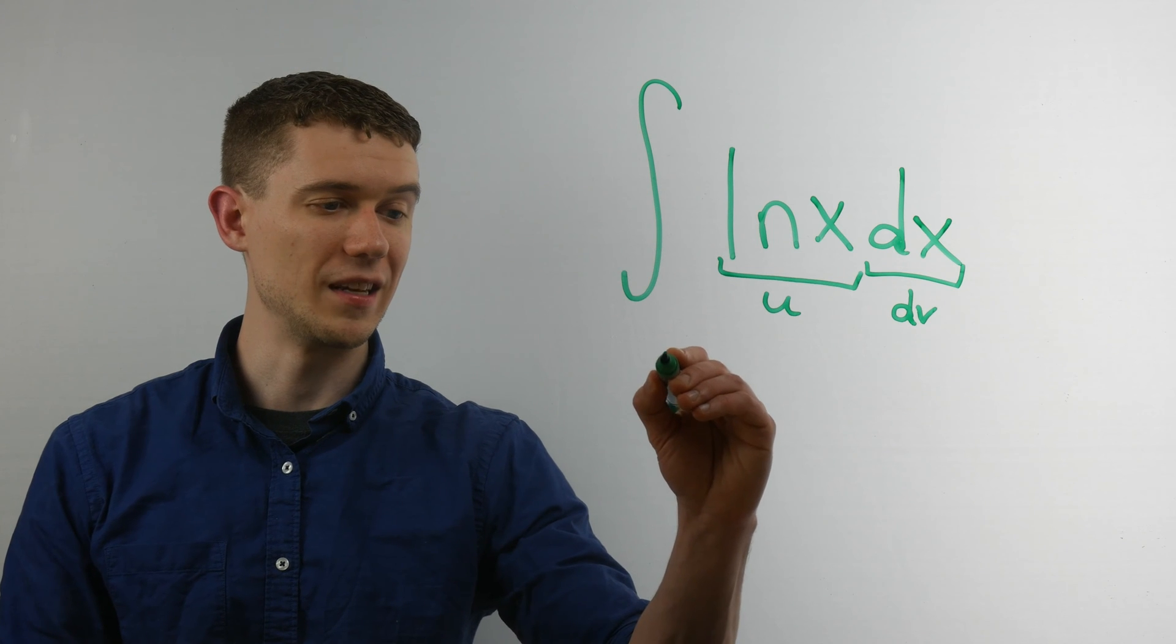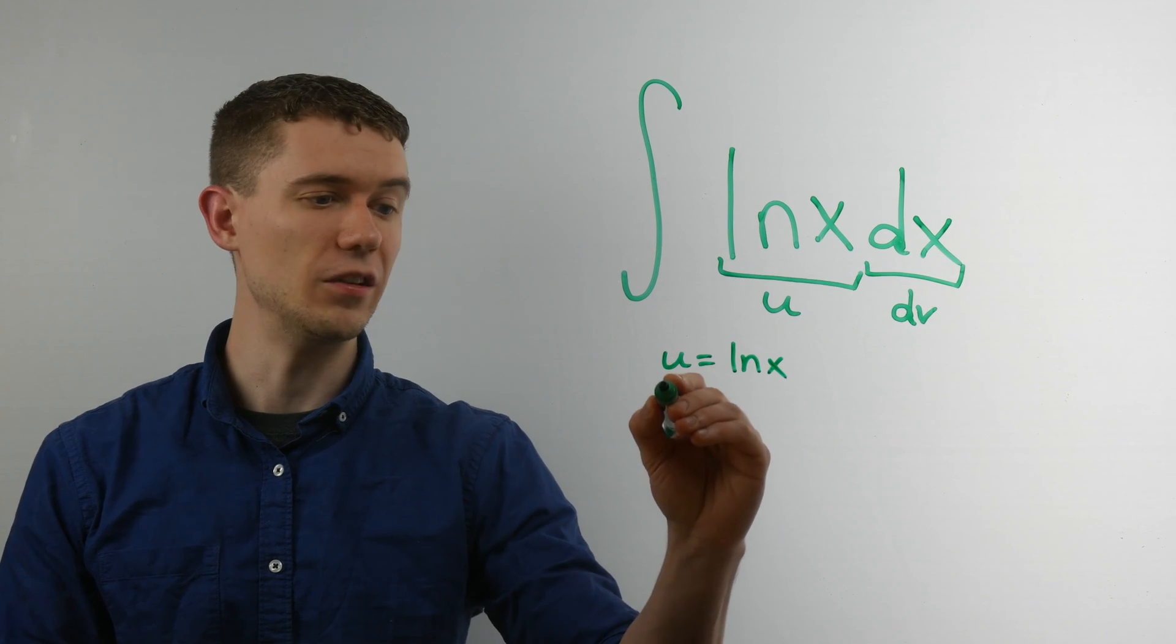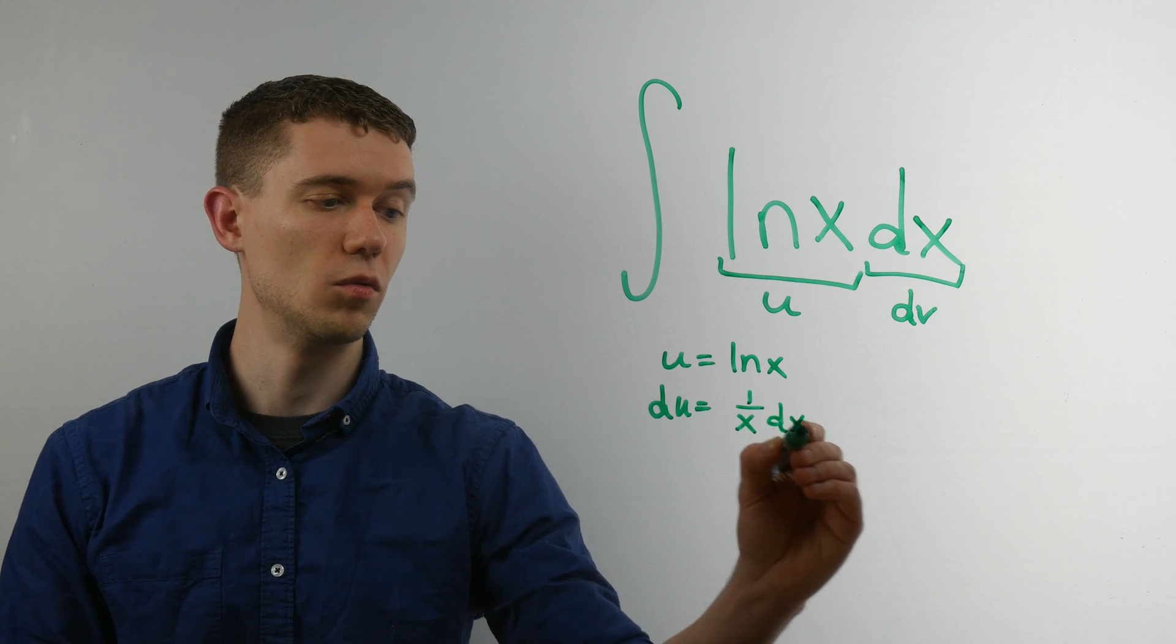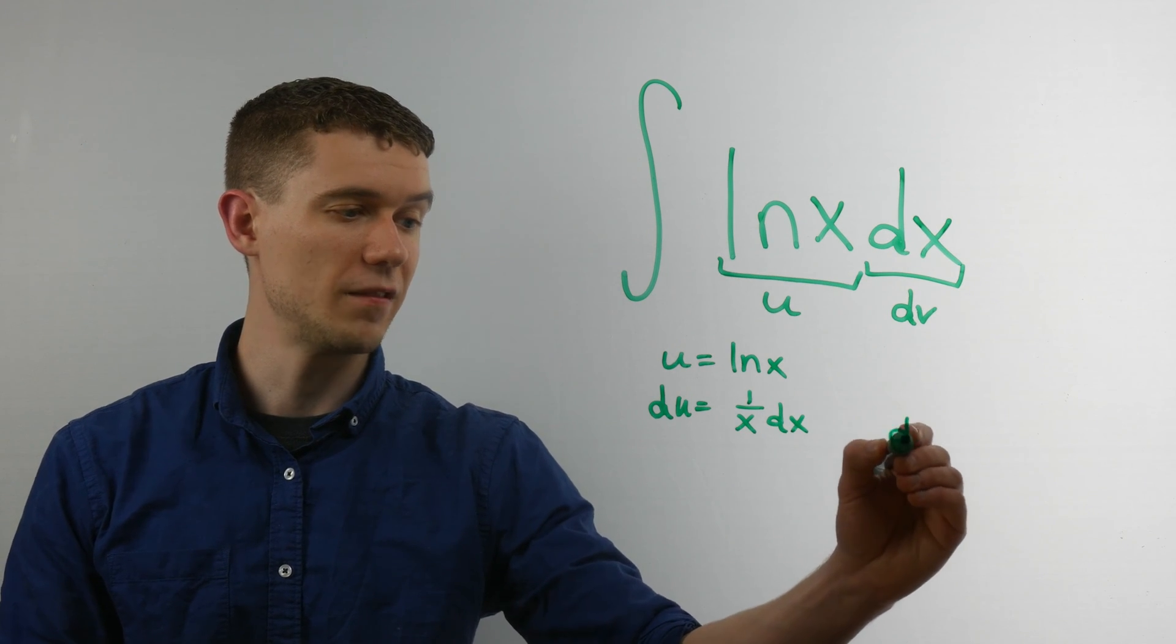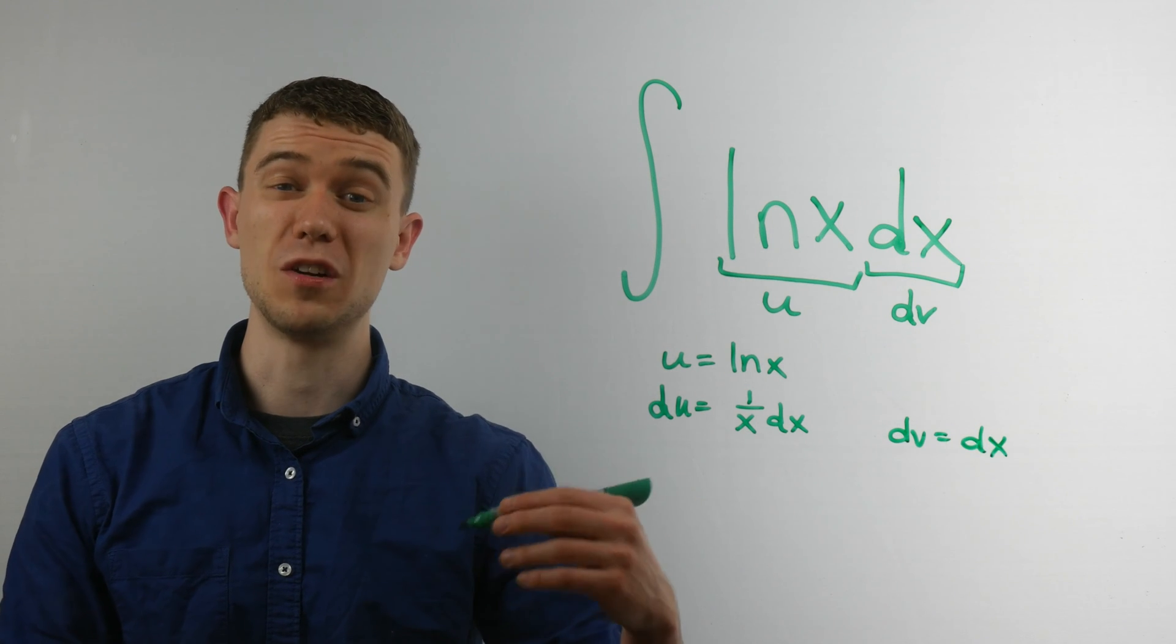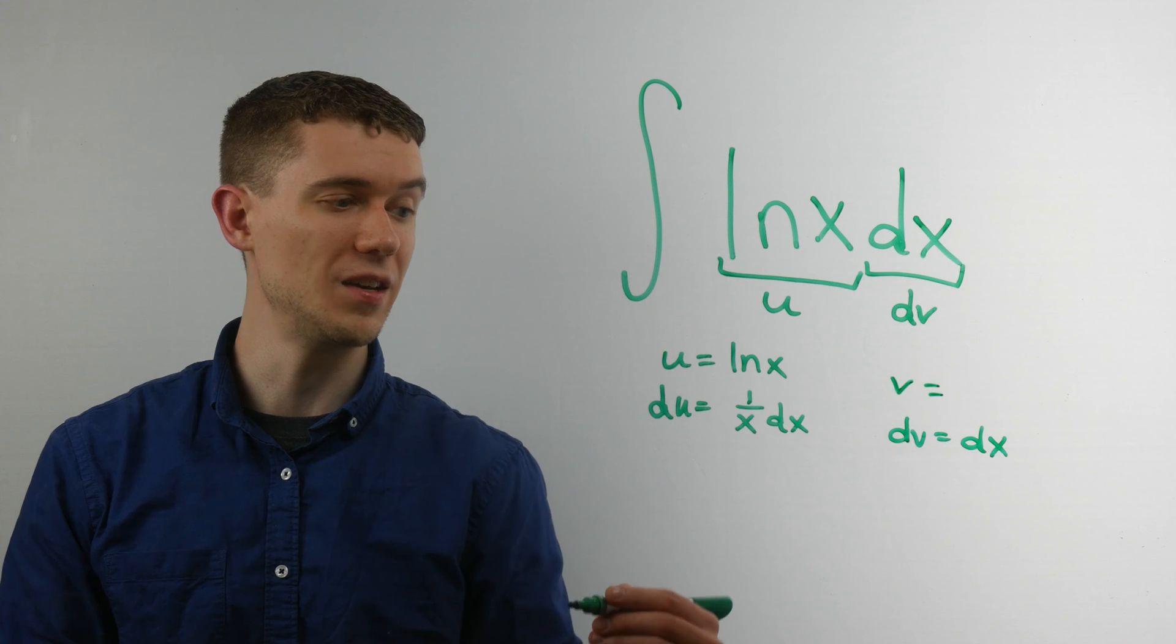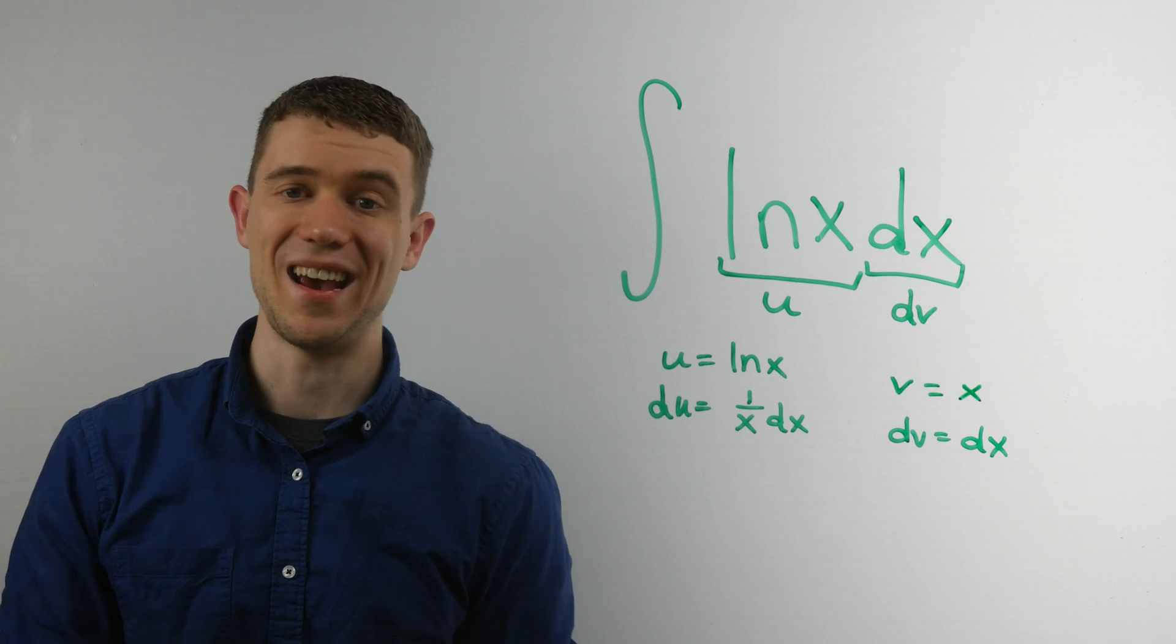And so the process works like this. If I have u, I need du, just like you would with a regular u substitution. So the derivative of natural log x, you would have seen by this point, will be 1 over x dx. And then I also have my dv, which I've selected to be dx. And now I'm going to go the other way. I'm going to anti-derive this thing. So the anti-derivative of dv will give us v, and the anti-derivative of dx will just be x.